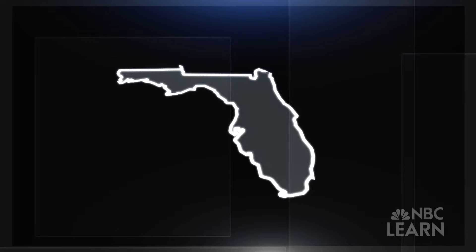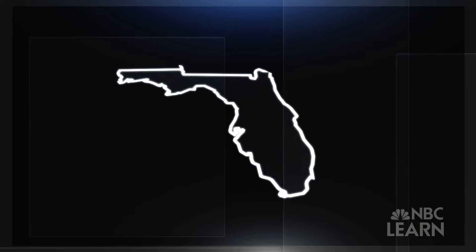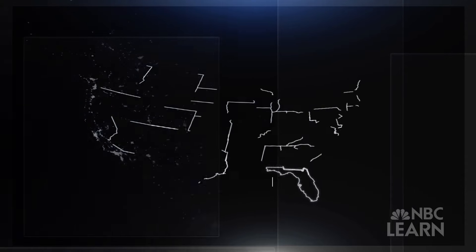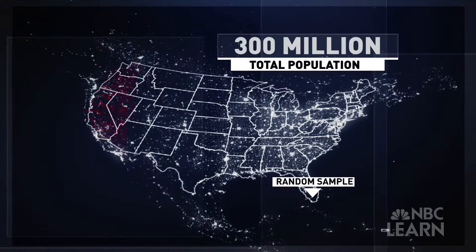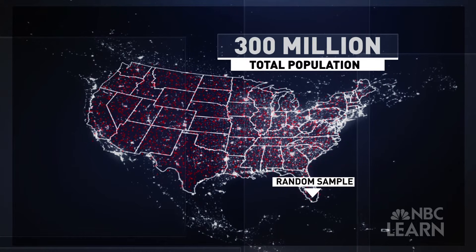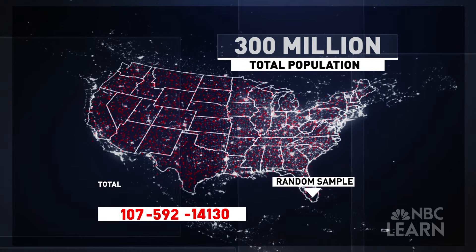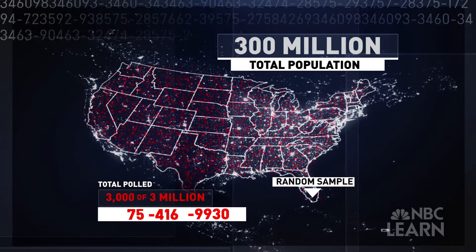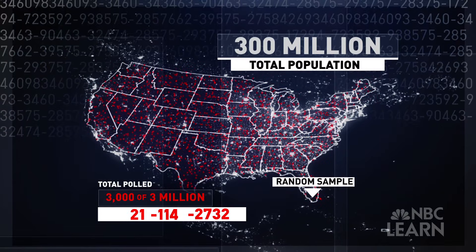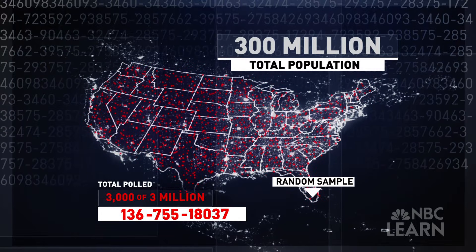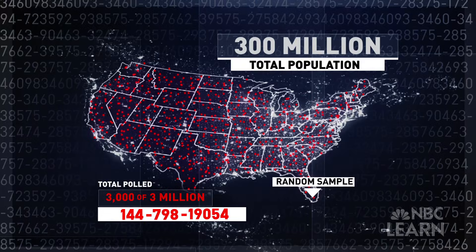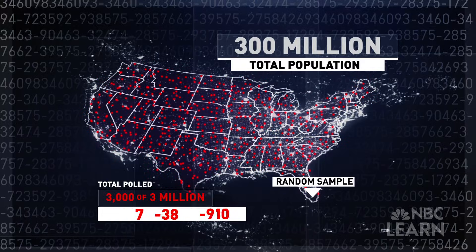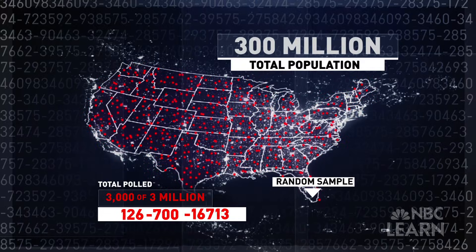An opinion poll might focus on a particular state such as Florida, or the entire U.S. population of more than 300 million people. Pollsters use computer programs to generate a random list of a few hundred or a few thousand telephone numbers from the larger group, and then they call each number to survey people for their opinions.